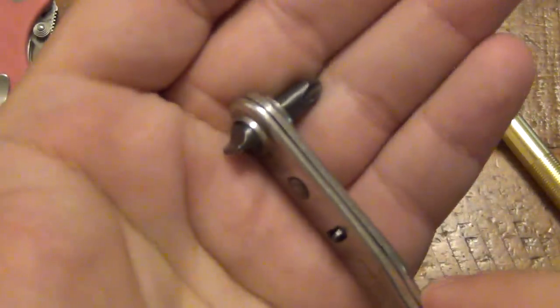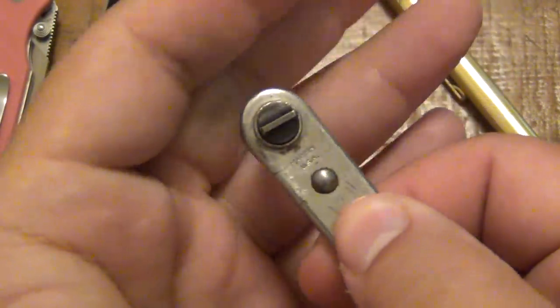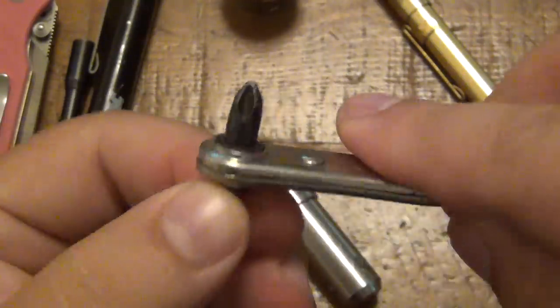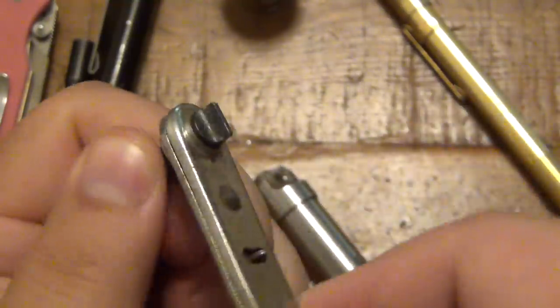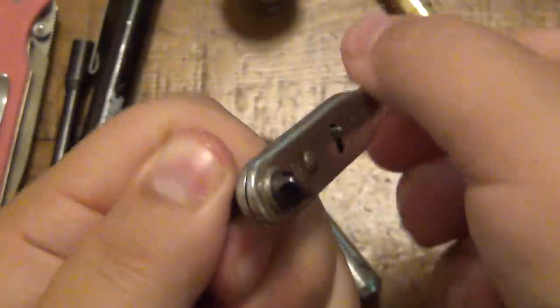So zoom in to show you that. It does ratchet so it goes both ways. You flip that back over, especially if you're flipping it over, it's obviously going to ratchet the opposite direction. So this would be loosening, and then you would flip that over to tighten.